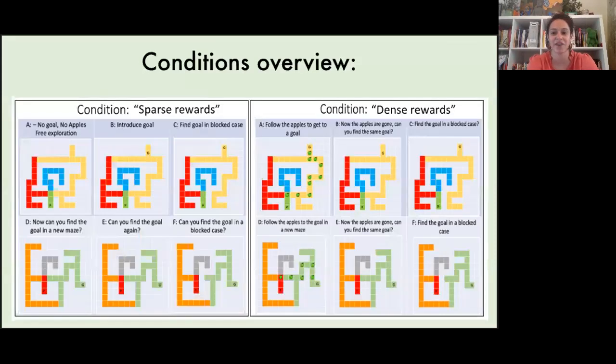Our experimental design is as follows. We have two conditions, which we call dense or sparse rewards. We want to explore whether having an initial reward path to get to the goal versus free exploration with no rewards affects children's abilities to find a goal in a follow-up maze. In the sparse rewards condition, you can see an aerial view for the six mazes that the children do. For part one children freely explore for three minutes. Then in part two we ask them to find the goal, and in part three we block the main path to the goal, similar to our first experiment.